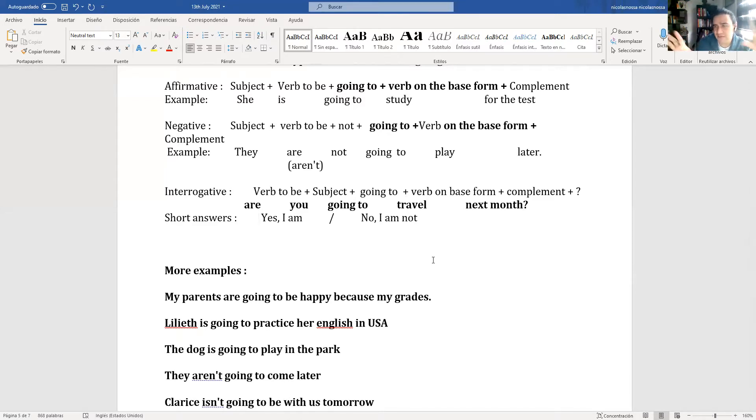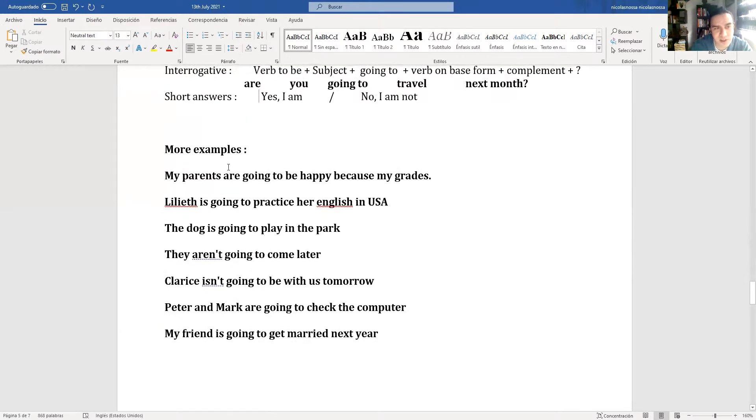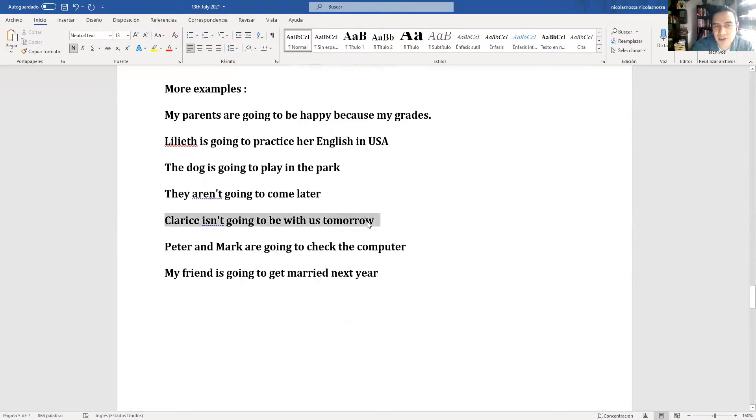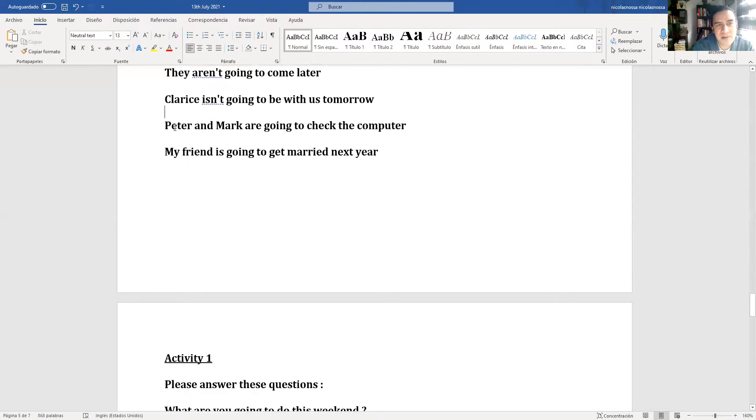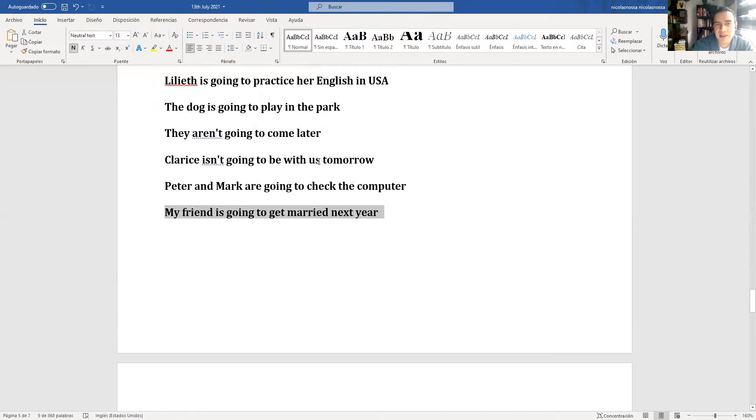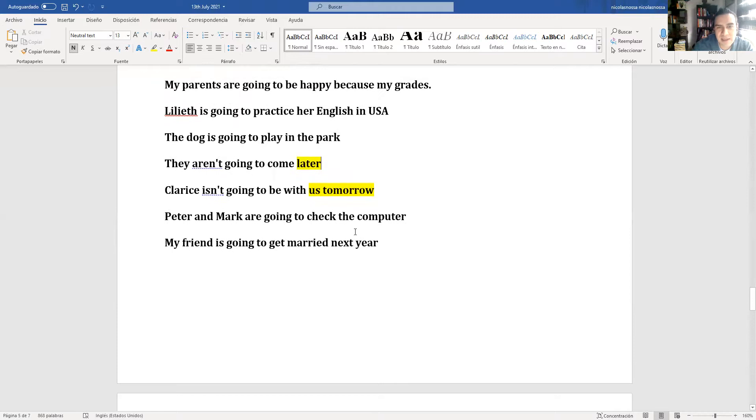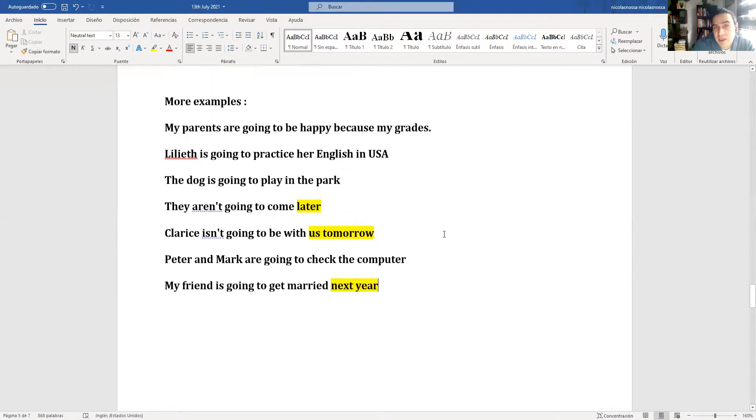Let's look at more examples. My parents are going to be happy because of my grades. Mis papás van a estar felices por las notas. Juliet is going to practice her English in USA. The dog is going to play in the park. They aren't going to come later. Clarice isn't going to be with us tomorrow. Peter and Mark are going to check the computer. My friend is going to get married next year.